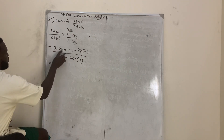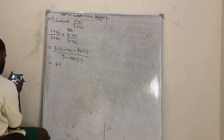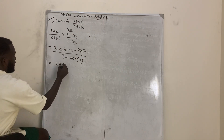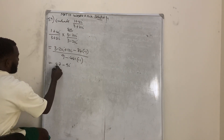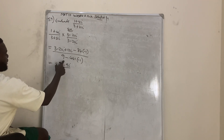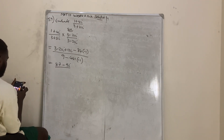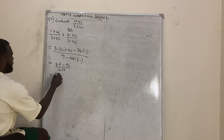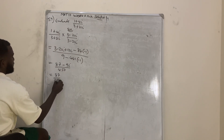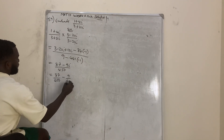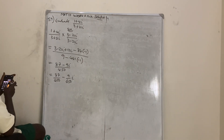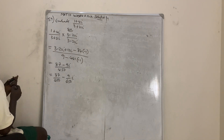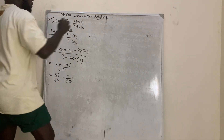For the imaginary part: −21i plus 12i gives −9i. The denominator is 9 plus 441, which is 450. Separating, the answer is 87/450 minus 9/450 i. Either form is correct.